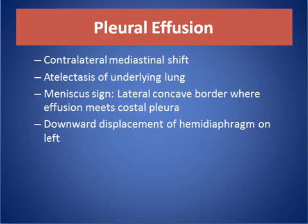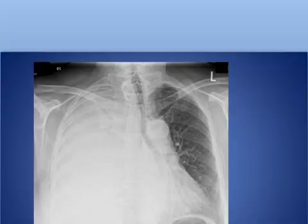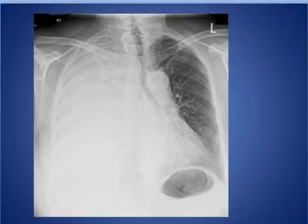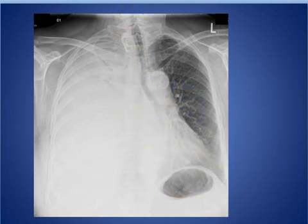The clues for the common diagnosis of pleural effusion: there is contralateral mediastinal shift, atelectasis of the underlying lung, we have a meniscus line, lateral concave border where the effusion meets the costal pleura, and downward displacement of the hemidiaphragm on the left side. Here we have a large amount of right-sided pleural effusion with mediastinal shift of the heart and trachea to the left side.